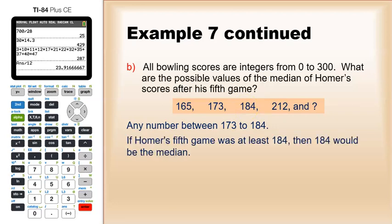Well, let's first take the case that his last game was his best, or at least better than 184. So let's say that he scored between 185, 186, 220, all that. In that case, his fifth game would be around here, and 184 would be the median.